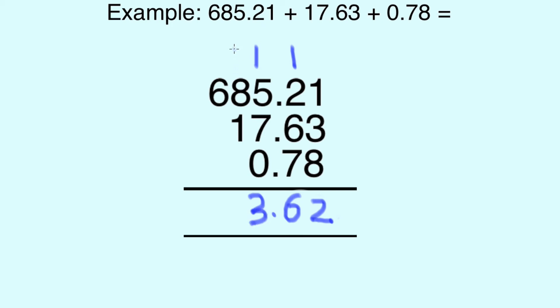The 1 is carried over into the next column as we've always done. 1, 8, and 1 is 10. So a zero goes in here.